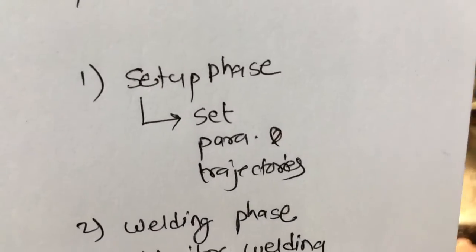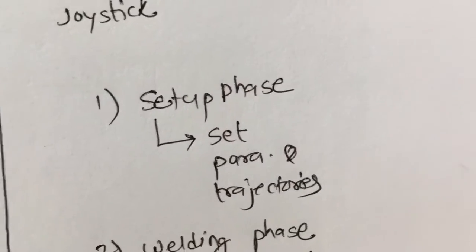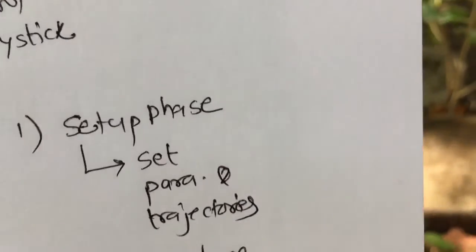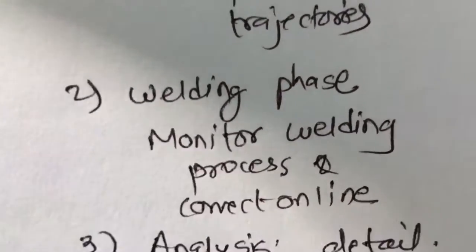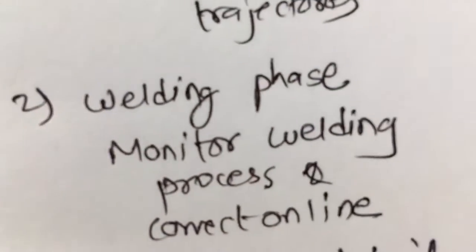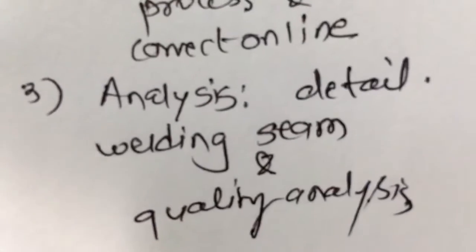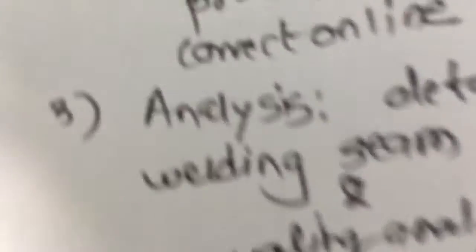There are three phases in this welding application. The first is the setup phase, used to set parameters such as welding current, gas flow, and arc voltage, as well as welding trajectories. The second is the welding phase, used to monitor and correct the welding process online. The third is the analysis phase, used to evaluate the welding seam quality and perform detailed analysis of the completed weld.